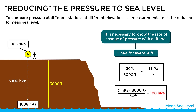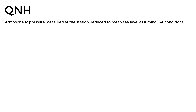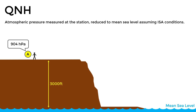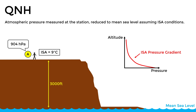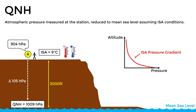Having understood this, let's move on to the next concept: the QNH. This is the atmospheric pressure measured at the station, reduced to mean sea level assuming standard temperature conditions. Let's suppose we have the same situation as before, and the station reports a QFE of 904. Under standard conditions, the temperature at 3,000 feet is 9 degrees Celsius, so we will assume that temperature to calculate the vertical pressure gradient, regardless of the actual temperature conditions at the station. Let's say that under these conditions we calculate a pressure difference of 105 hectopascals, resulting in a pressure at sea level of 1,009 — in other words, the QNH is 1,009. Calculating the QNH is not so simple, since the correct vertical pressure gradient must be determined as a function of the standard temperature as we descend, but we will not go into detail on this.